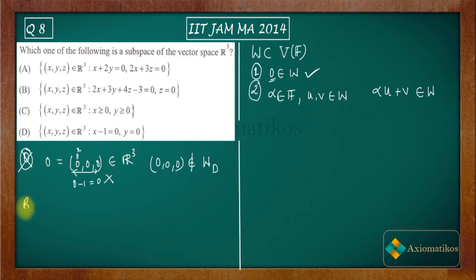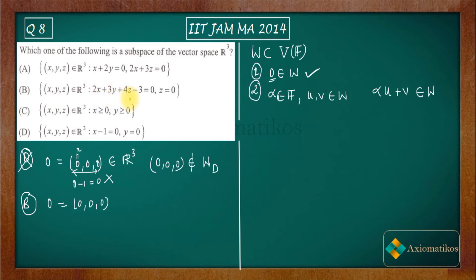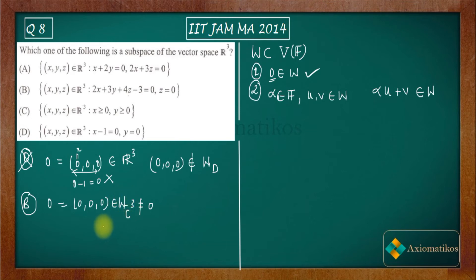Now let us come to option B. Option B says 2x plus 3y plus 4z minus 3 must be zero and z should be zero. Again, check your zero element: if you place zero for x, zero for y, and zero for z, you get minus three equals zero. Minus three is not equal to zero. Therefore, the zero element of the vector space does not enter subset WB, meaning it will not be a subspace.